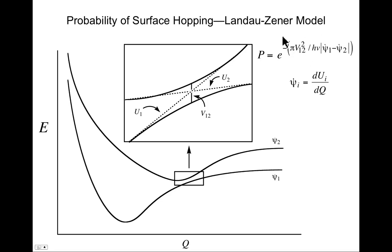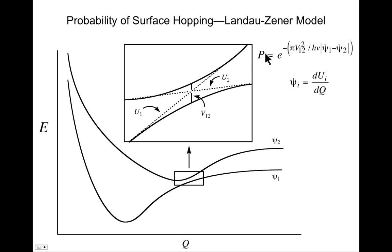You'd want the exponential argument to be zero, so the probability equals 1. One way to make that happen is to have v12 equal zero — as the curves touch one another, within the Landau-Zener model you'd get 100% probability of crossing. It's not actually meant to be applied when they touch, but the bottom line is the closer they get, the more likely crossing becomes.